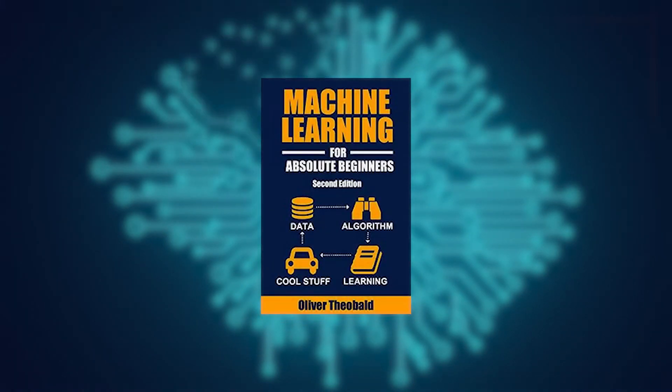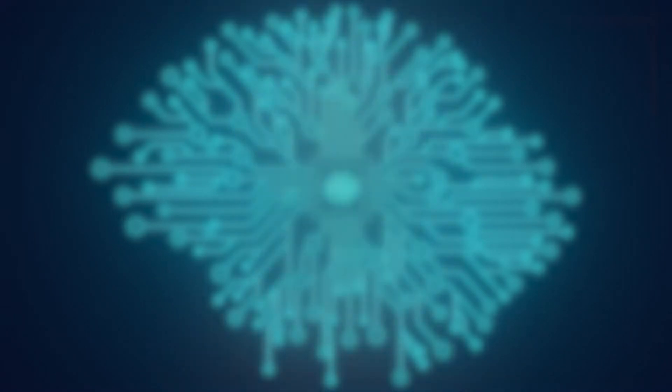First, we have Machine Learning for Absolute Beginners. As the name suggests, this book is for everyone who knows nothing about machine learning. Oliver Theobald is the author, and he discusses the very basic concepts of machine learning. You don't need any prior knowledge of programming. The book contains Python examples with good infographics and visuals to explain complex topics with simplicity. If you're new to programming and machine learning, this is the must-read book to build a strong understanding on the topic.